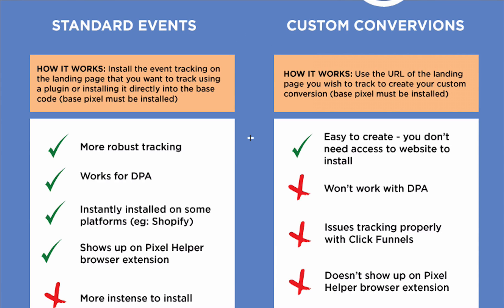So that's a standard event. The second option, custom conversions, is slightly different in that you don't actually install anything on the landing page. The base pixel is already there, and all you need to create a custom conversion is the URL of that thank you page or confirmation page — whatever page confirms the conversion, whether it's requesting a quote, opting into an email, or purchasing something.